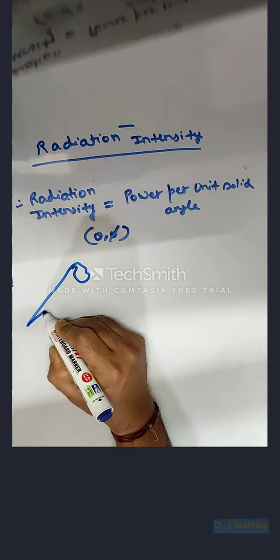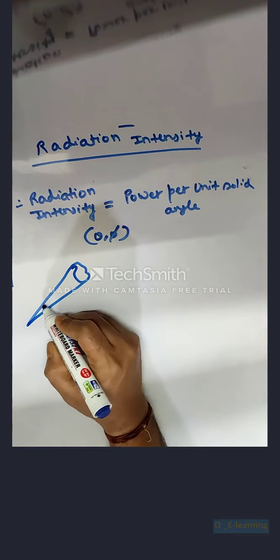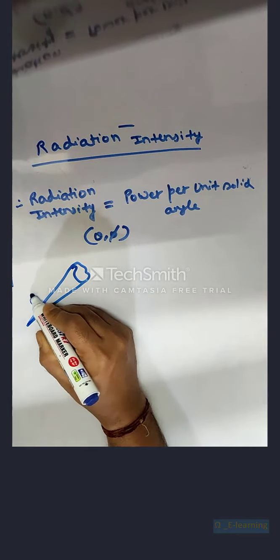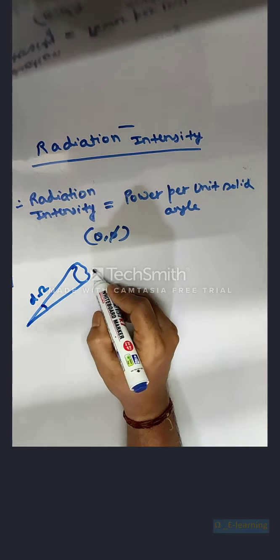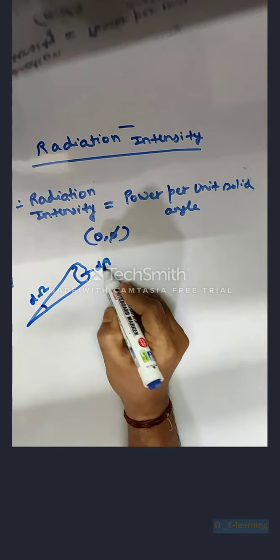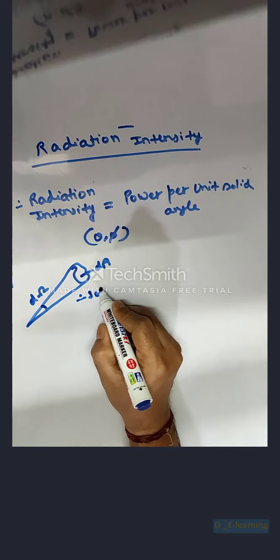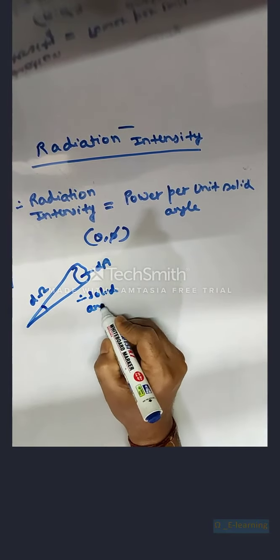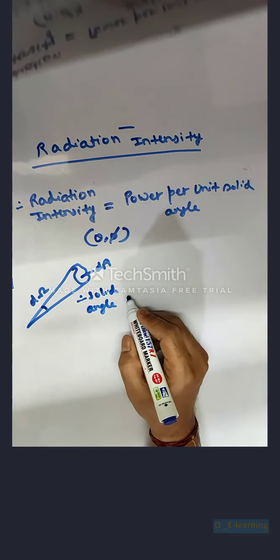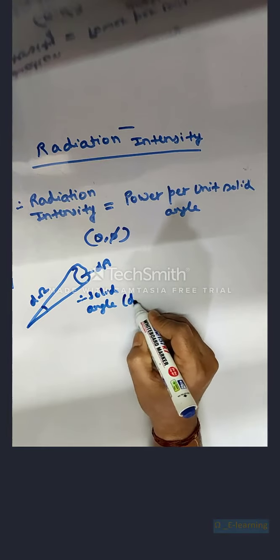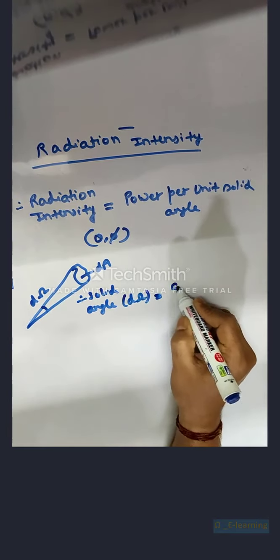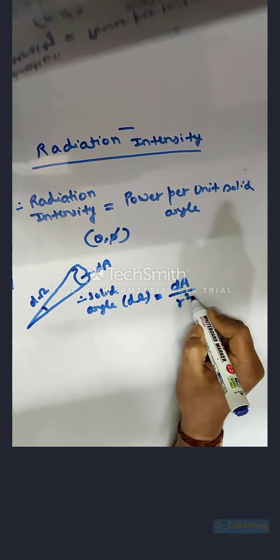Now let us take an area of this one. Now let this be d omega, that is solid angle. Distance from the origin is R. This is dA, but this is solid angle. d omega, which is equal to dA by R square.